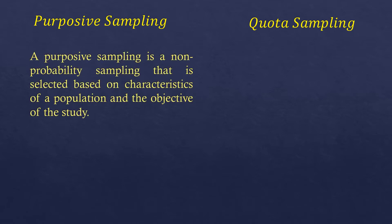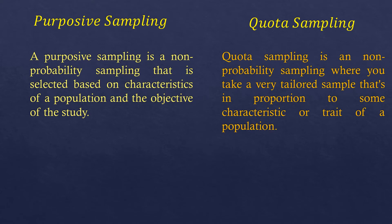Purposive sampling is a non-probability sampling that is selected based on characteristics of a population and the objective of the study — so we are selecting participants according to their characteristics and considering the objective of the study. For quota sampling, it is also a non-probability sampling where you take a tailored sample that is in proportion to some characteristic or trait of a population, so we basically choose participants according to their characteristics as well.